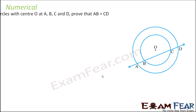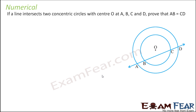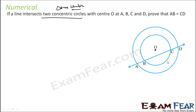Let's take one more example. If a line intersects two concentric circles with center O at points A, B, C, D, we need to prove that AB is equal to CD. Concentric circles means they have the same center — O is the center for both circles. This line intersects at points A, B, C, D.